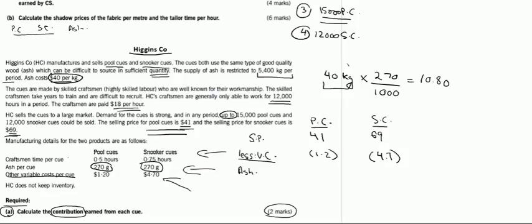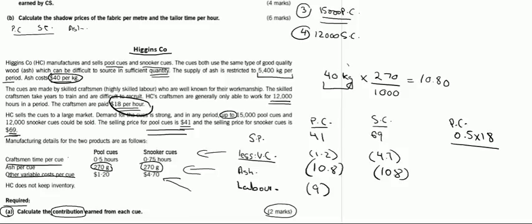The material cost for ash in each of the products will be $10.80. Lastly, we know that the craftsman time per cue is 0.5 for pool cues and 0.75 for snooker cues. So we will have to subtract the labor cost. The last point of the second paragraph says that the labor cost is $18 per hour. For pool cues, the labor cost will be 0.5 hours times $18, which comes out to $9. And for snooker cues, it will be $18 multiplied by 0.75, the hours consumed on snooker cue, so it will be 0.75 times $18, which is equivalent to $13.50.